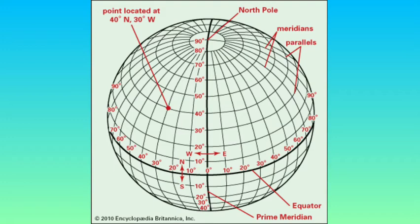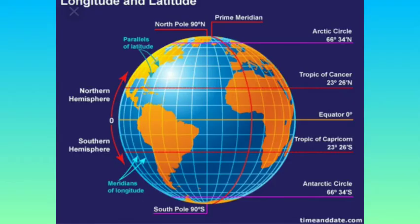The equator is also called the great circle — it is the longest latitude. As we move northward or southward, the latitude decreases in size. You can see from the picture that the widest part of the earth is near the equator. As we move towards the poles, the latitudes become smaller and smaller until they become a single point — one at the north pole and one at the south pole.